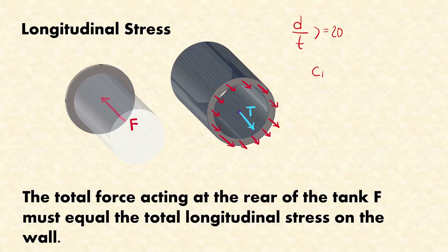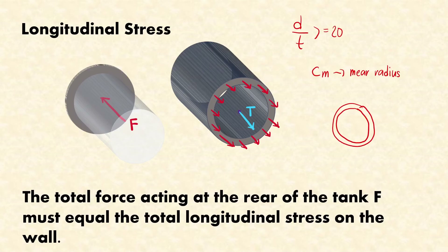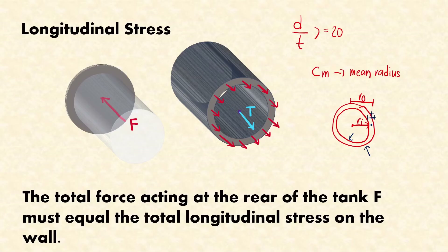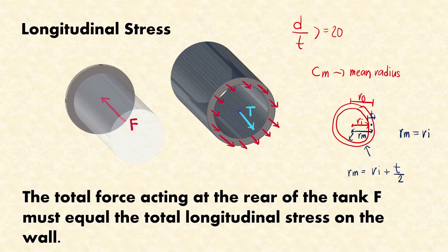The mean circumference corresponds to the mean radius of the vessel. The mean radius R_M equals the inner radius plus half the thickness. However, for thin-walled vessels, we use the approximation R_M ≈ inner radius. That's why in our derivation we use the inner radius corresponding to the inner diameter. The force F is the internal pressure times the area, which is π d² / 4.